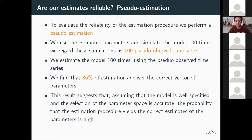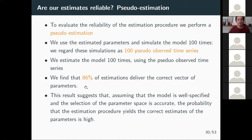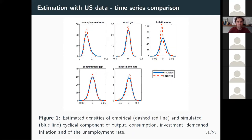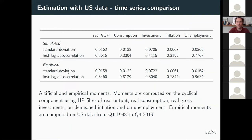We also do a pseudo-estimation exercise: we simulate the model and use those simulations as pseudo observed time series to estimate the model. In theory we should always recover the parameters used to produce the pseudo-observed time series; instead we get 86% correct estimations, which we think is a reasonable number. We also compare the unconditional distributions of the estimated model's time series with the observed data, and similarly examine the moments.